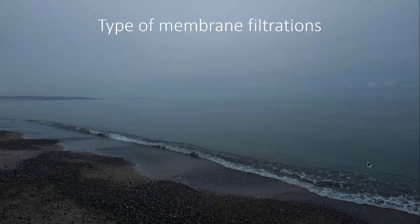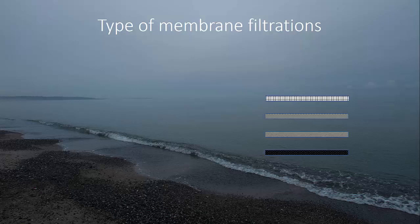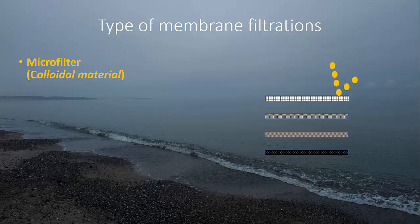What type of membranes and filtration possibilities do we have? There are four types represented by four rectangular bars. The first is microfilters. Microfilters remove colloidal material — very fine particles that don't settle by gravity and can't be removed by sedimentation. These can be removed by microfilters. Talking about membranes for water treatment, microfilters are rather coarse.